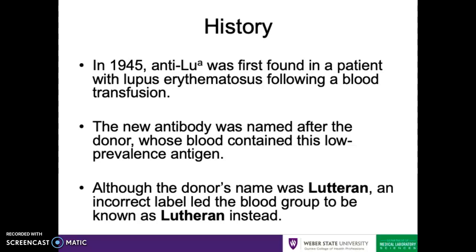To start with, in 1945, anti-Lutheran A was first found in a patient with lupus erythematosus following a blood transfusion. The new antibody was named after the donor on whose blood this low prevalence antigen was found. Unfortunately, due to an incorrect label, instead of calling the blood group Ludrin, it was called Lutheran instead, which has stuck with it. It's a shining example of why we need to be careful about how we label our tubes.